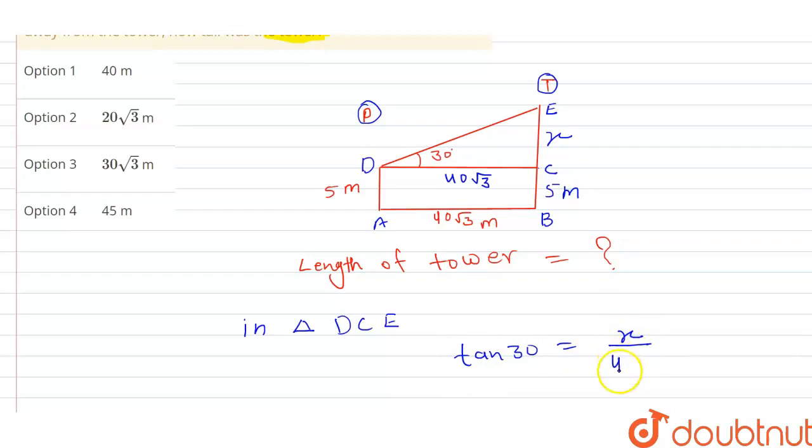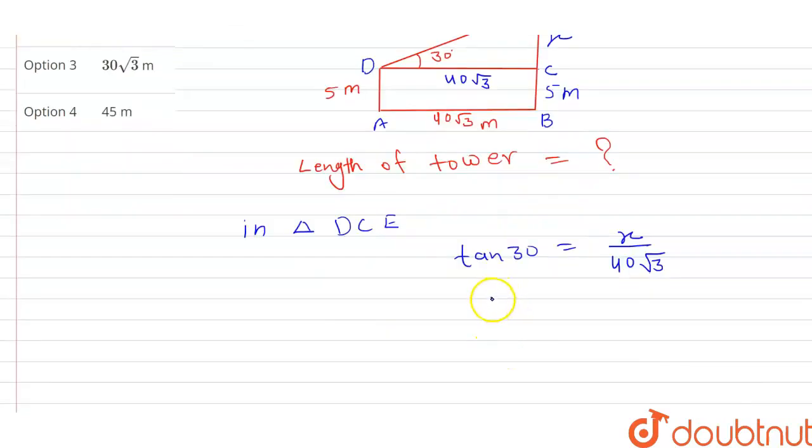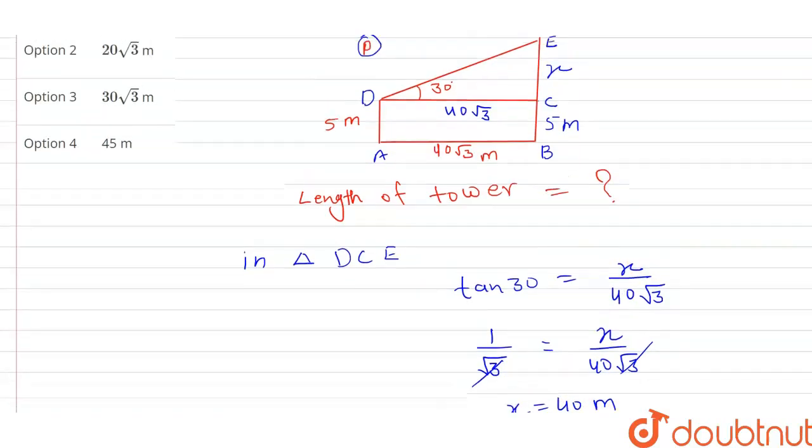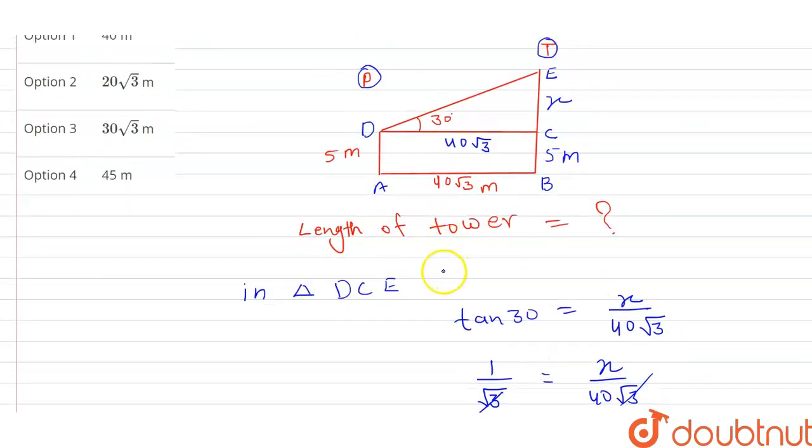So, here you can write tan 30 value 1 upon root 3 equal to X upon 40 root 3. Root 3 root 3 cancel out, X equal to 40 meter. So here you can write tower length, because X value is 40 meter.